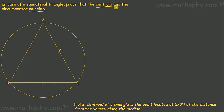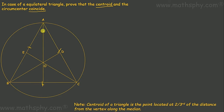Let's focus on the centroid first. To get the centroid for this equilateral triangle, we need to draw three medians on all three sides. We have these medians AF, BD, and CE. Since they are the medians of this equilateral triangle, the place where they intersect is the centroid.